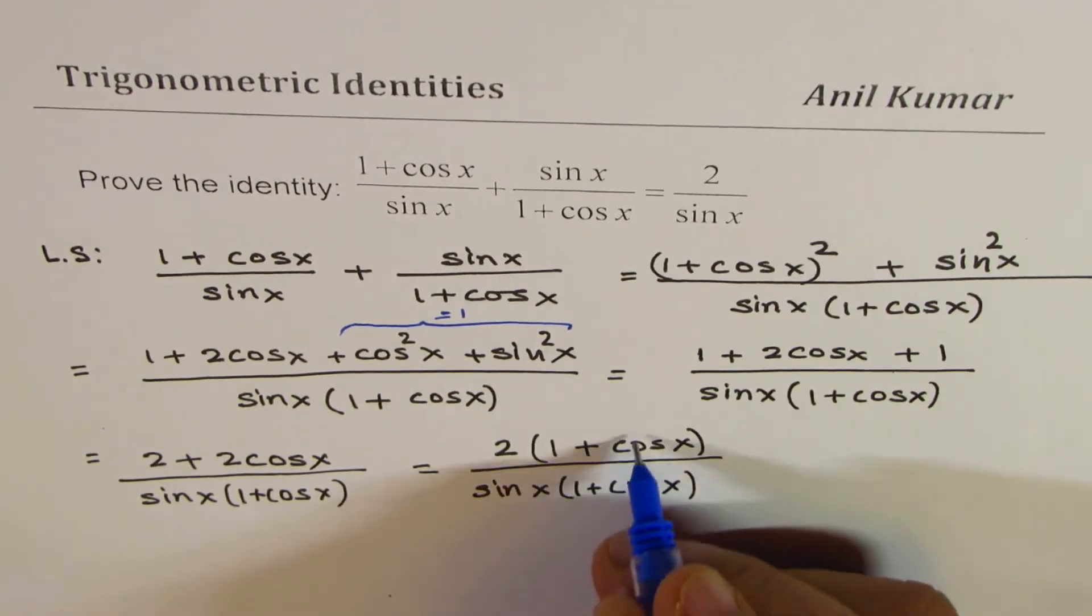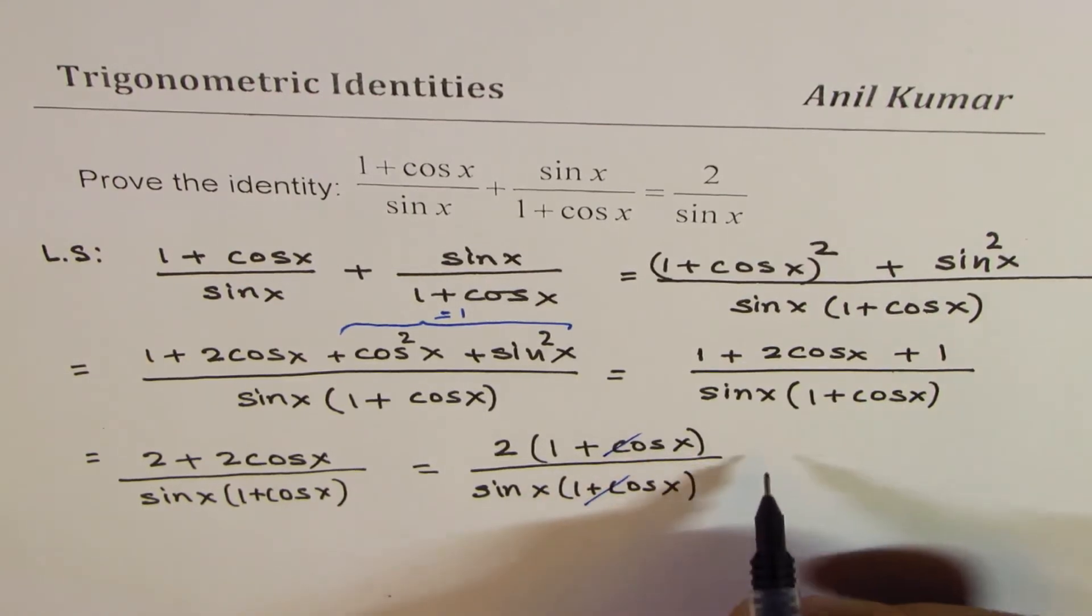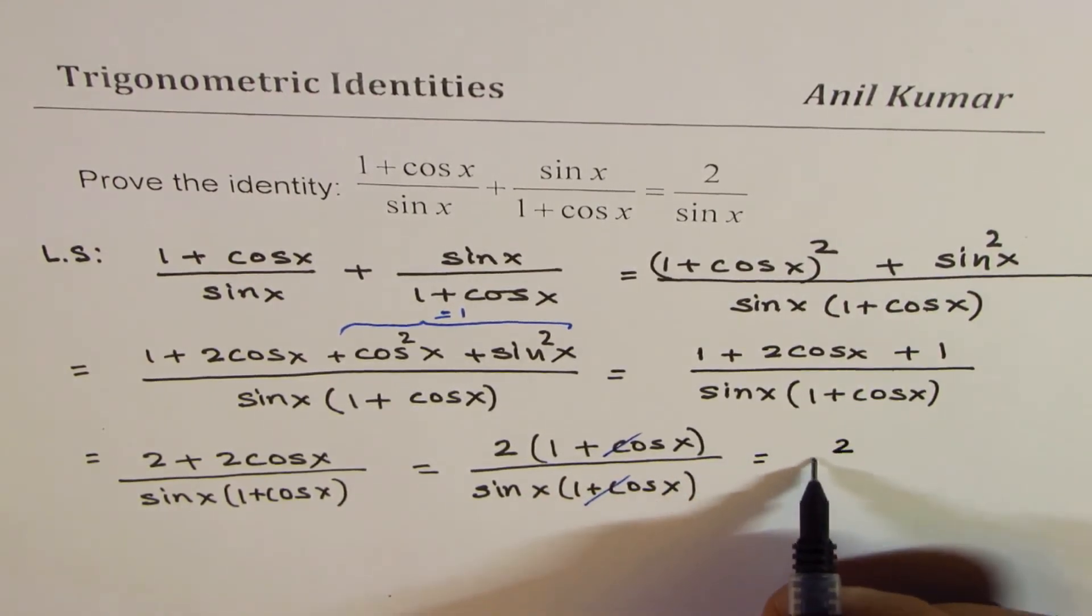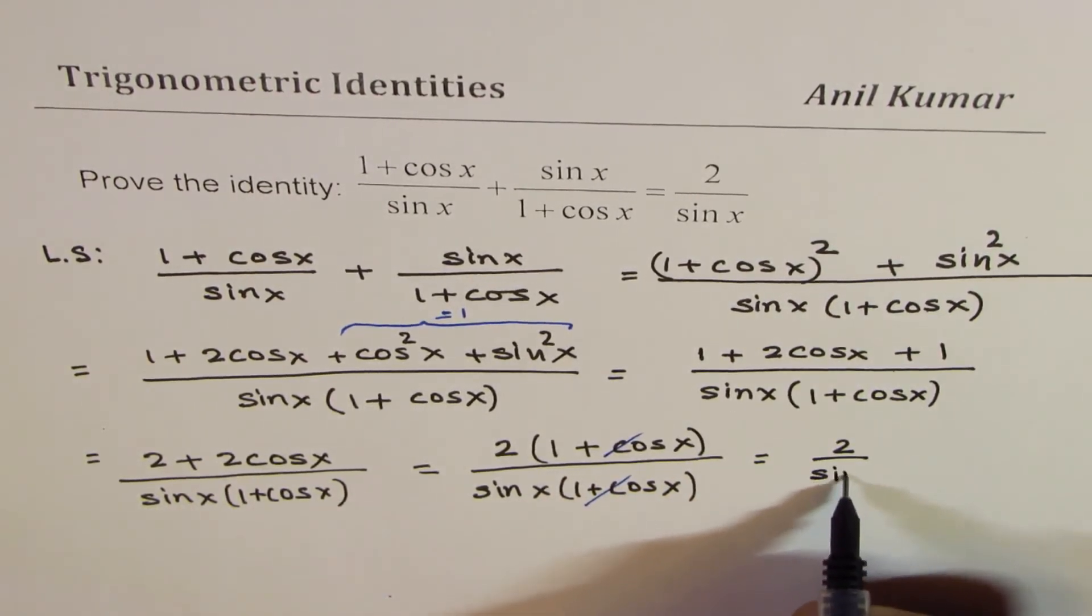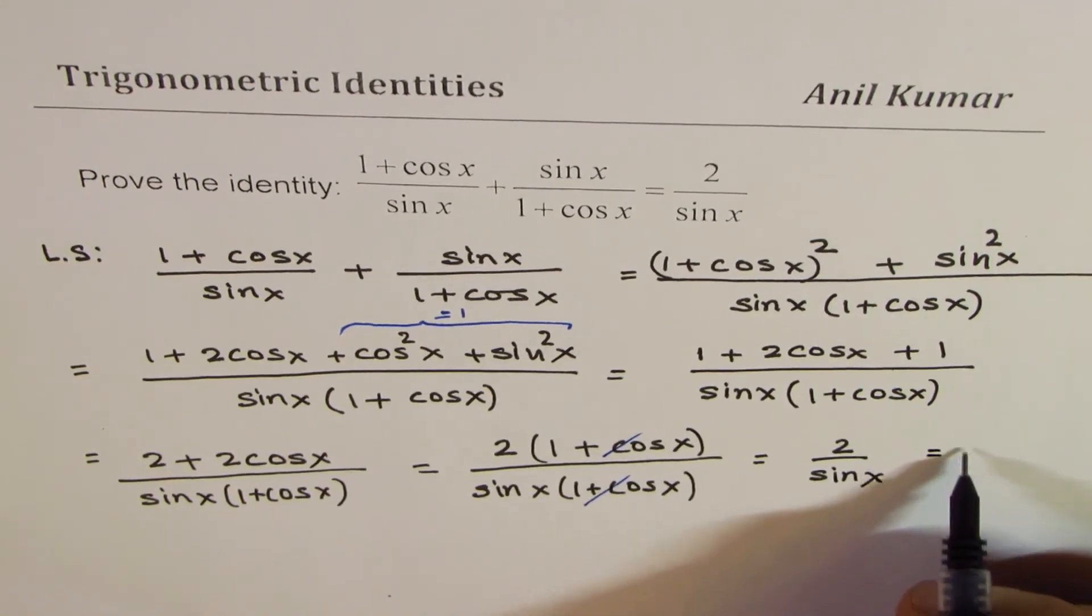So, you can now cancel these two common factors, and what you get is 2 over sin x, which is the right side.